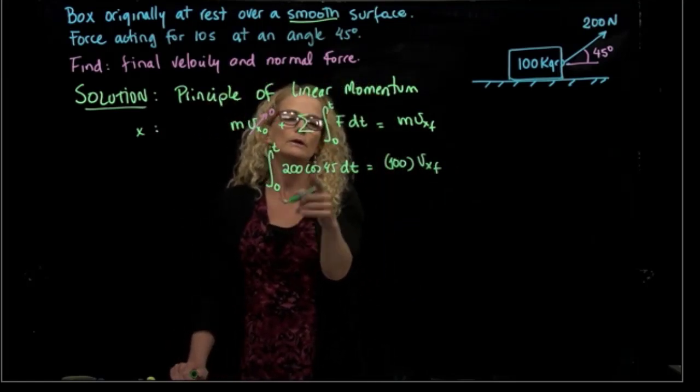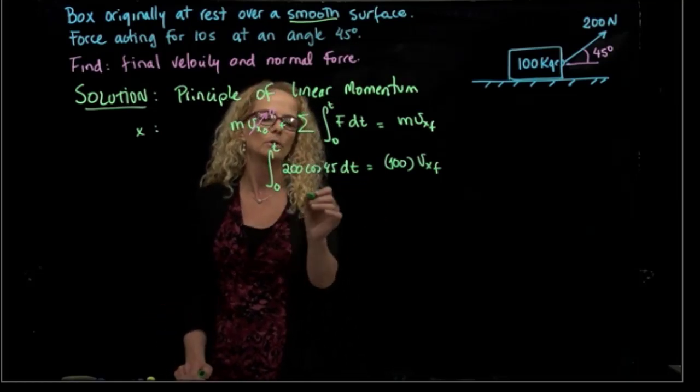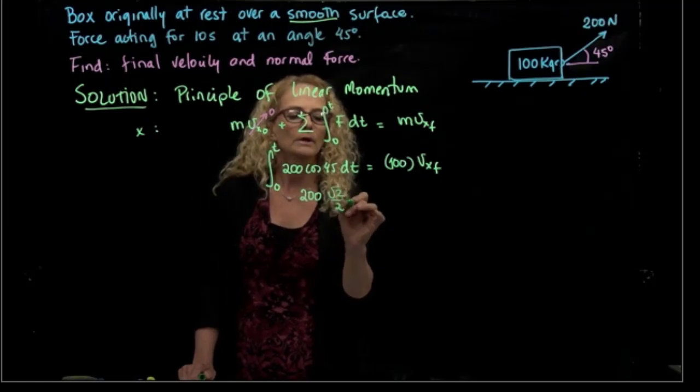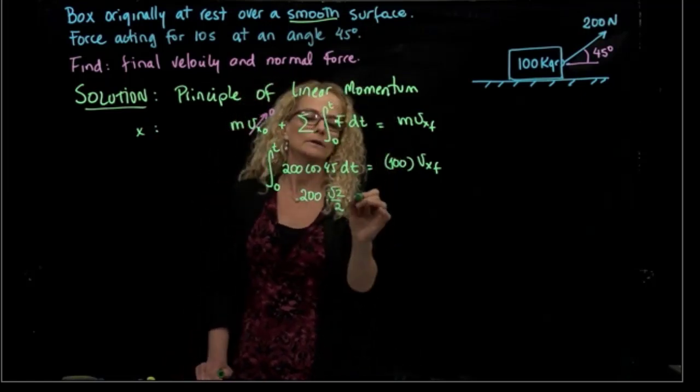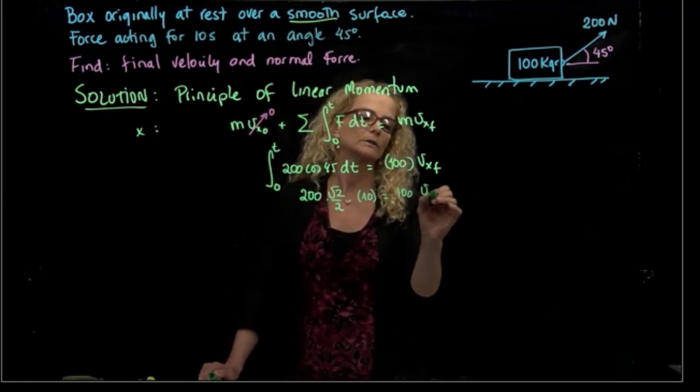Here I do this integral. Since this is a constant, this goes out of the integral, and it's just the time. So, it will be 200 square root of 2 over 2 times the time, which is given, which is 10, equals to 100 velocity of x.